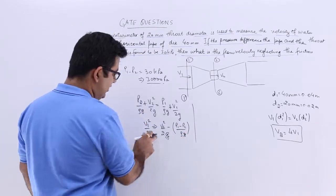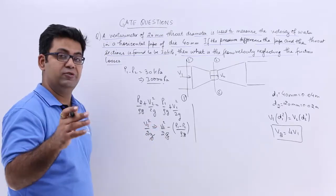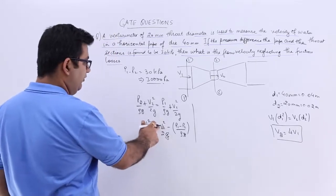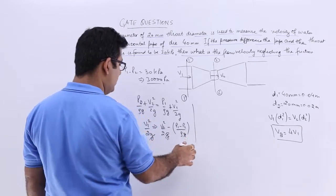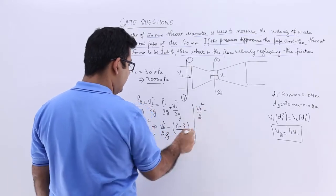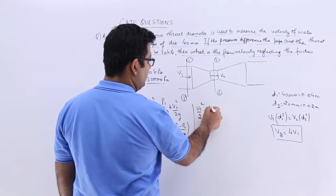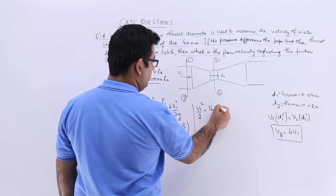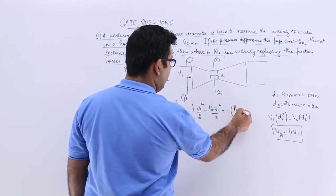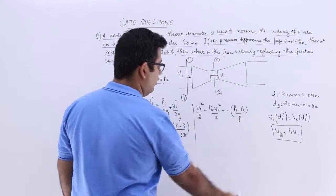So V1, now this V2 is basically 4 times V1. So I can put 4V1 over here. So you will get V1 squared by 2 minus this becomes 16 times V1 squared upon 2 minus P1 minus P2 upon rho.